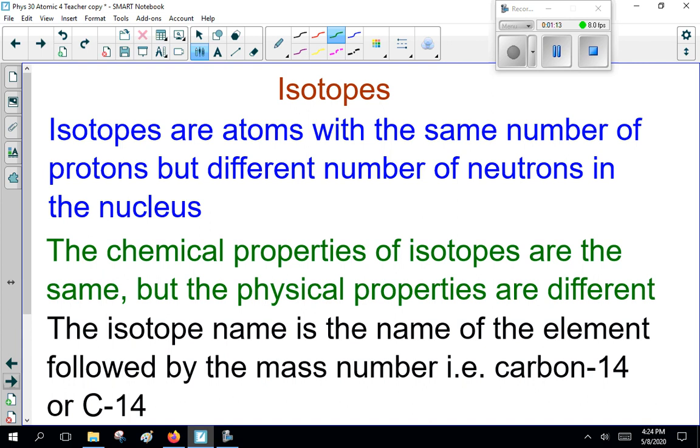Isotopes are atoms with the same number of protons, that's Z, but different numbers of neutrons N, and hence the mass number is slightly different. Now, the chemical properties of isotopes are the same, but the physical properties are different.